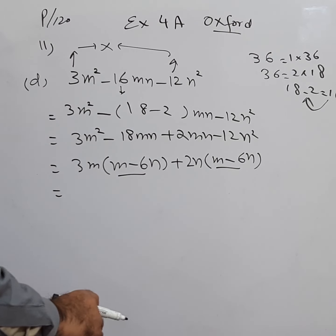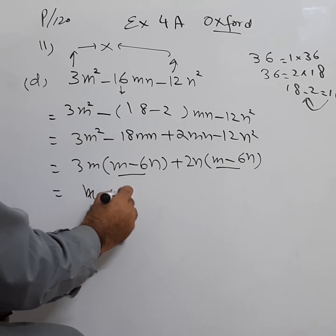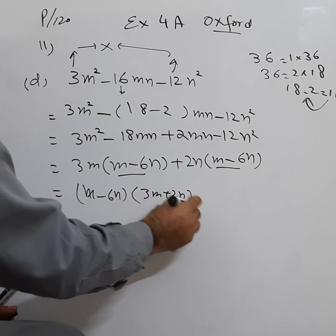These are twice coming twice as a common, we take as a common m minus 6n, then put a bracket 3m plus 2n. This is the solution.